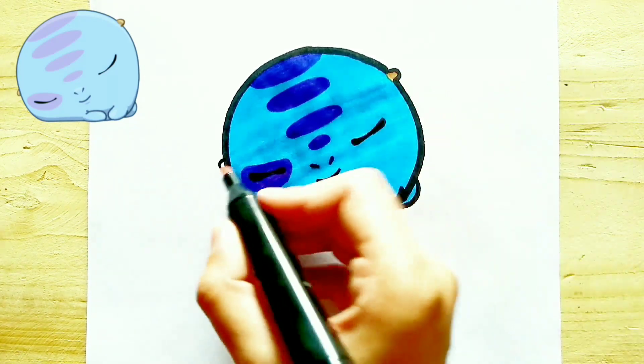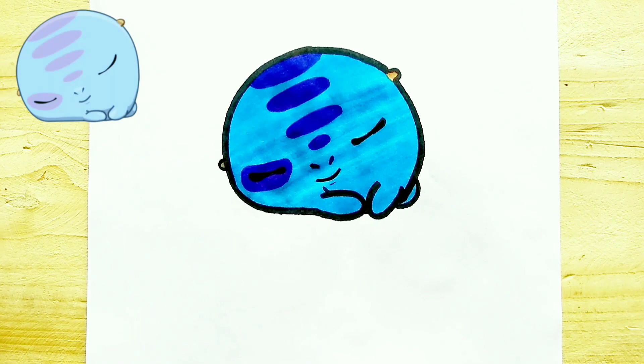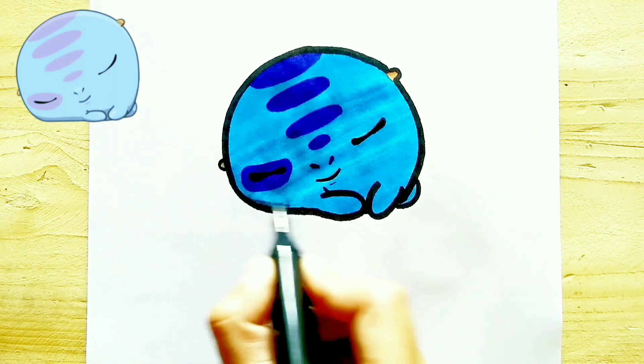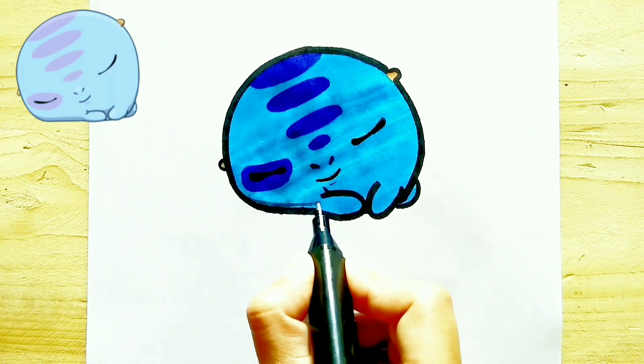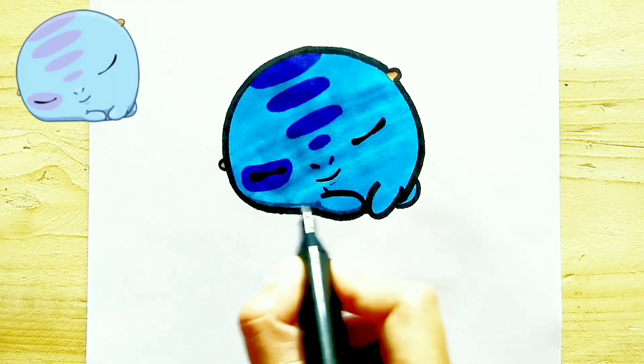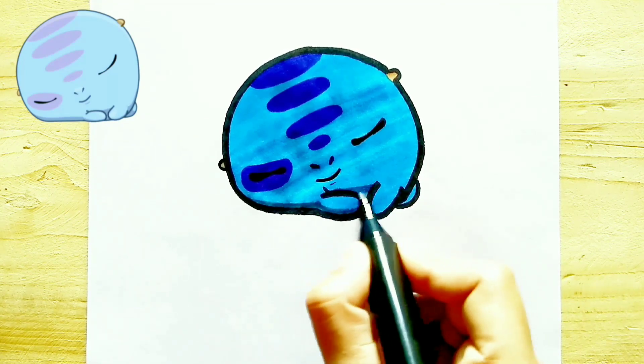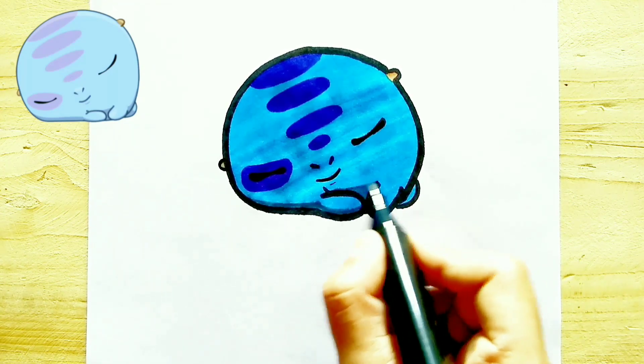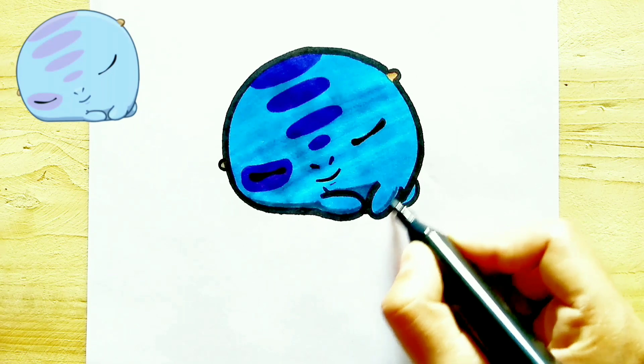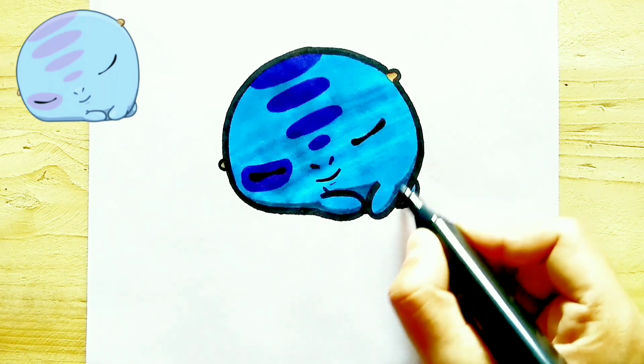Then I started to color his ears with brown color and give a shade of shadow to his lower part. As you can see, I used gray color because dark blue will not look good, so I prefer gray color.